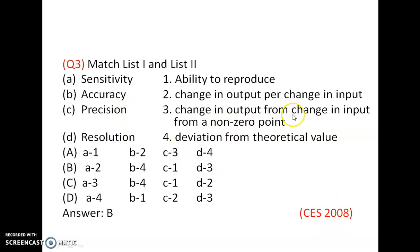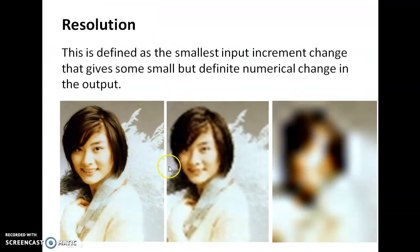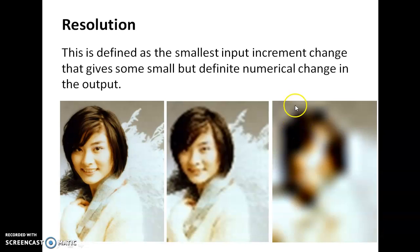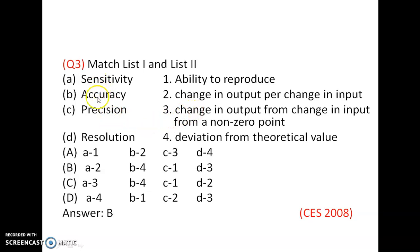Resolution is change in output from a non-zero point — when the input is slowly increased from a non-zero value, it is observed that the output does not change. In the diagram, if an image is divided into more pixels, the resolution will be more; divided into fewer pixels, the resolution will be less. So for resolution, the answer is 3.